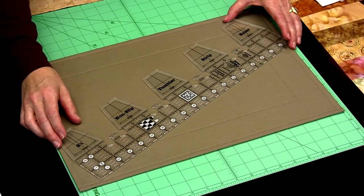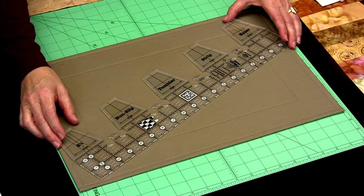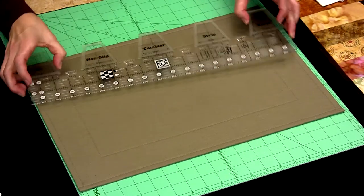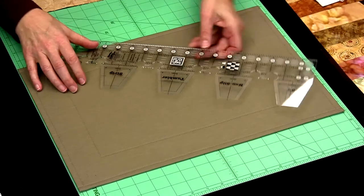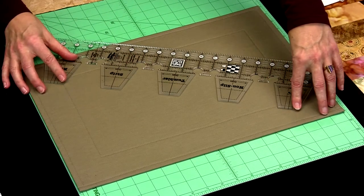Also with Creative Grid Rulers, we have the turnaround feature. One side of the ruler can be used to cut 2½ inch strips, and then when you turn the ruler around, you use it to cut your actual shape.